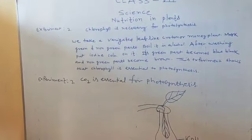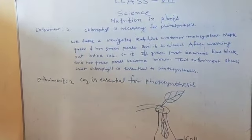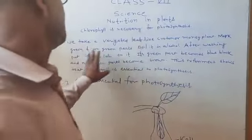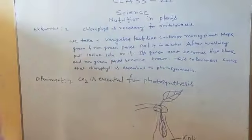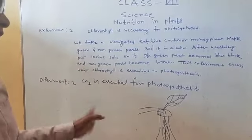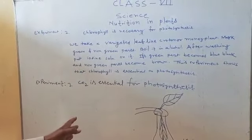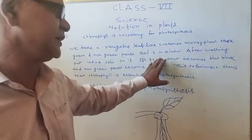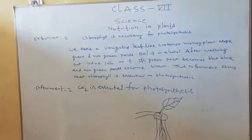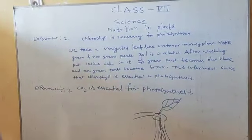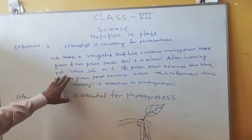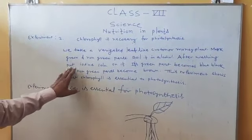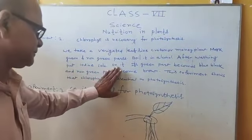Mark the green and non-green parts of that particular leaf. Then boil it in alcohol. After washing it, put iodine solution on it.